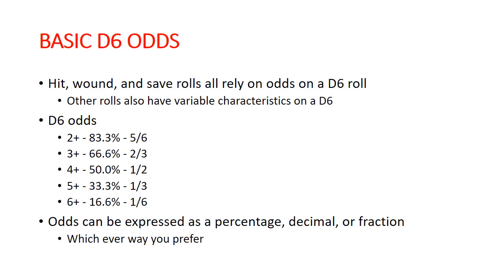There are also other things like variable amounts of attacks, variable damage, and other variable things on a war scroll that are also on a d6. For this purpose, we're just talking about the attack profile specifically, but just know that the d6 odds bit kind of carries over to everything else as well. A 2+ is going to be 83.3% success rate, or 5/6.